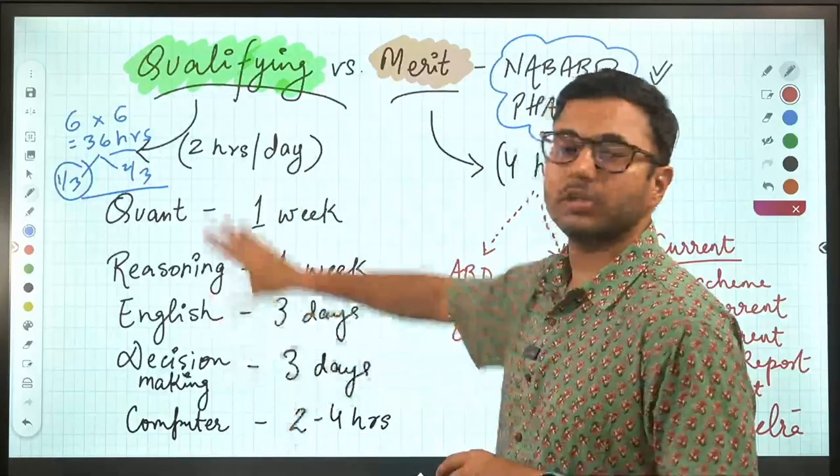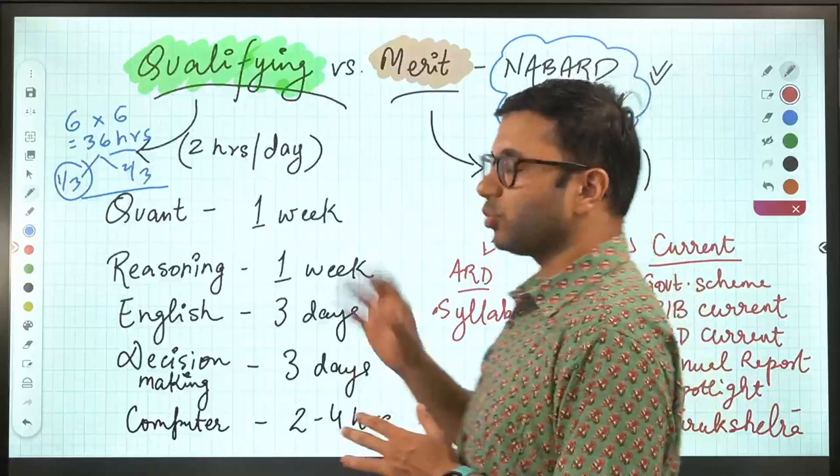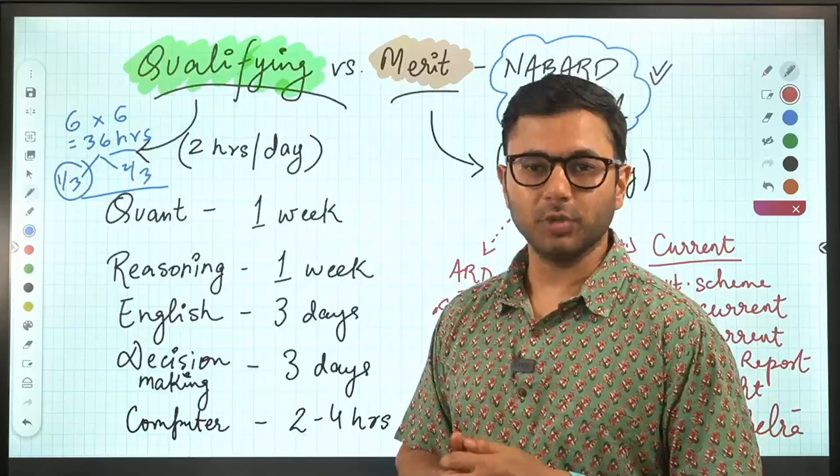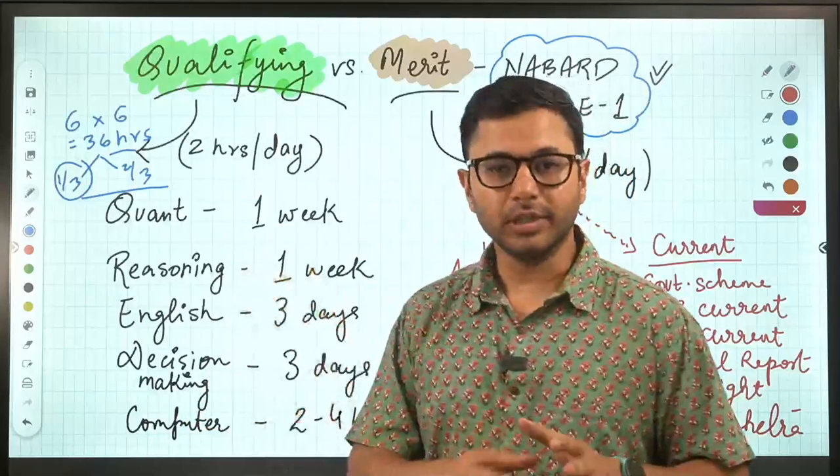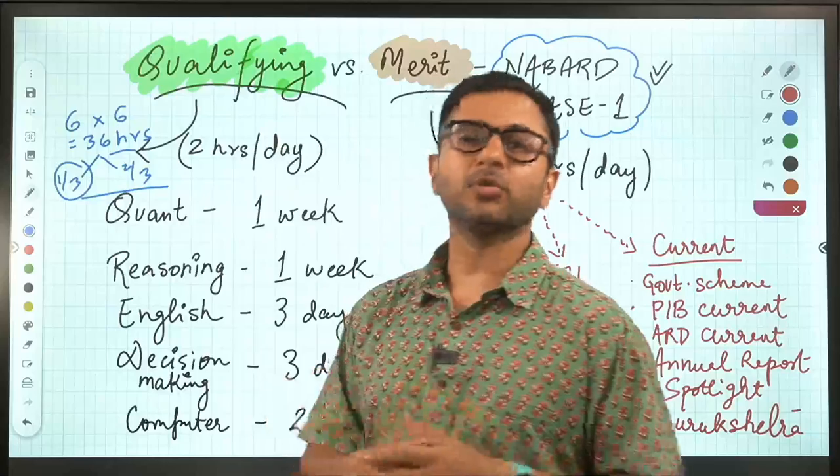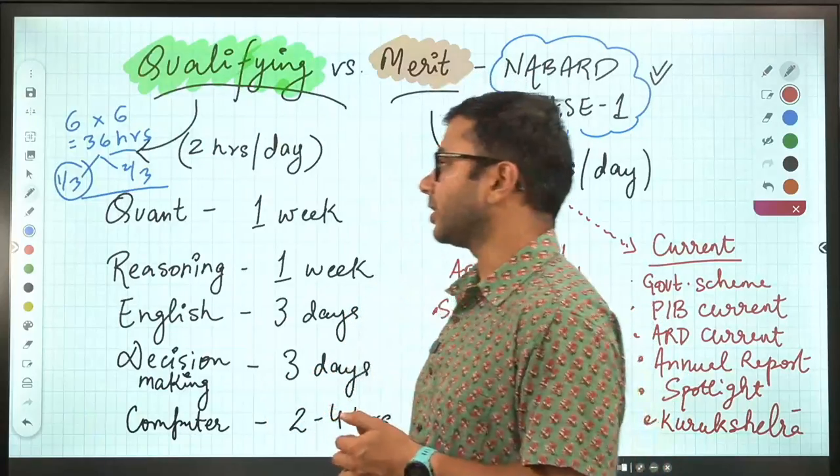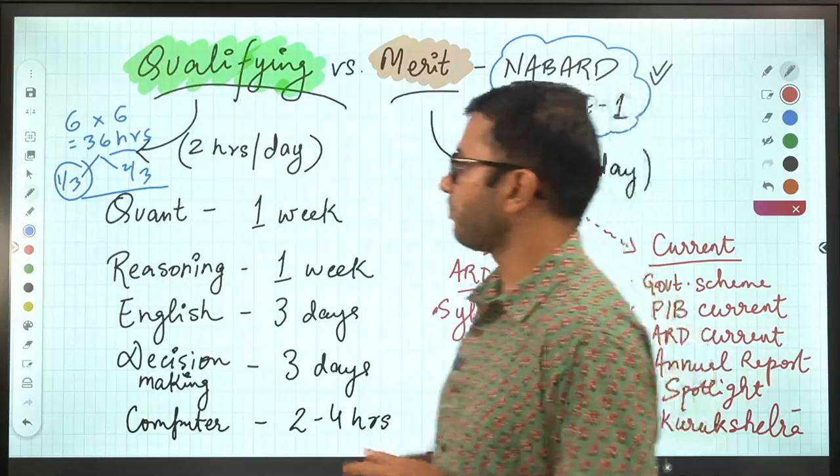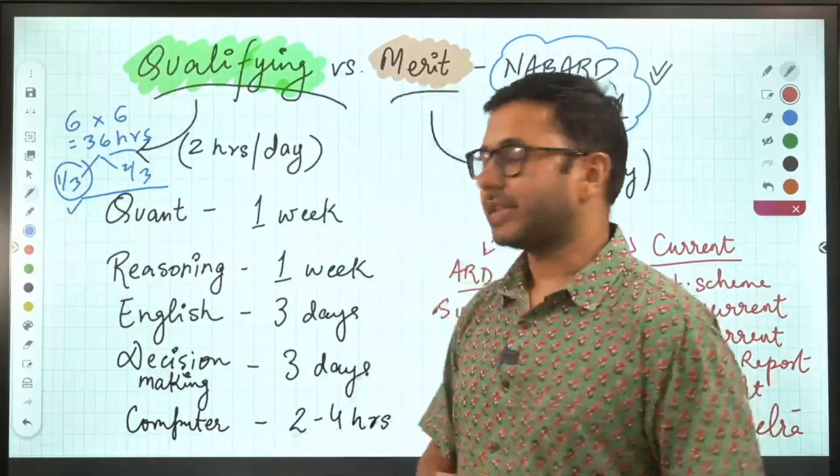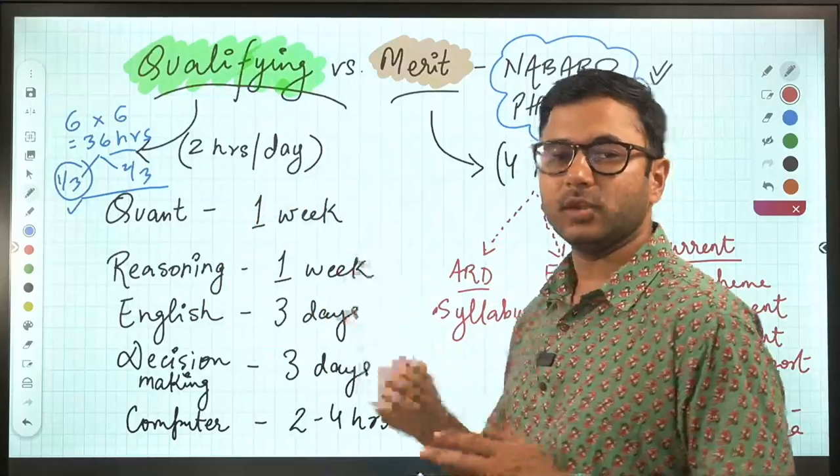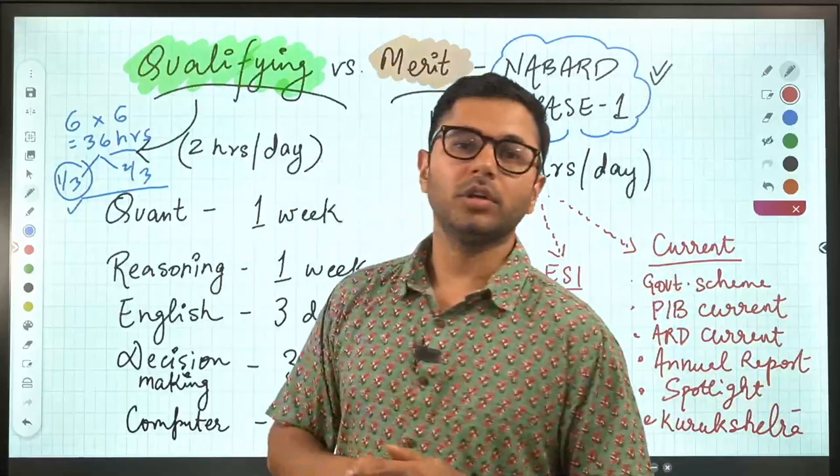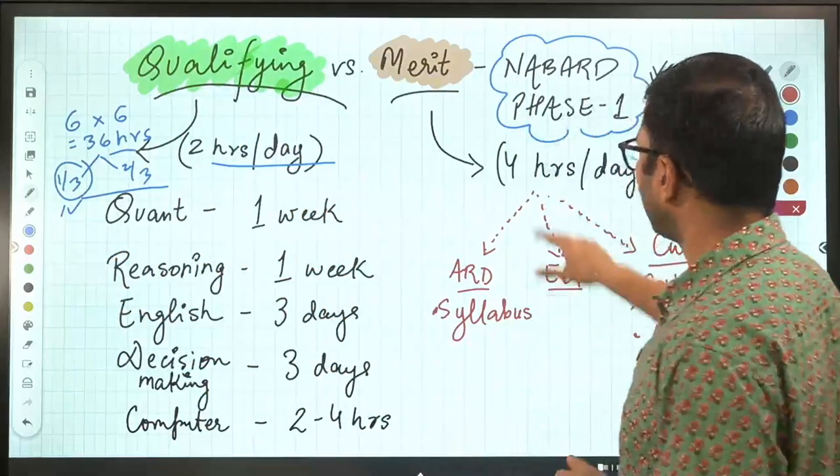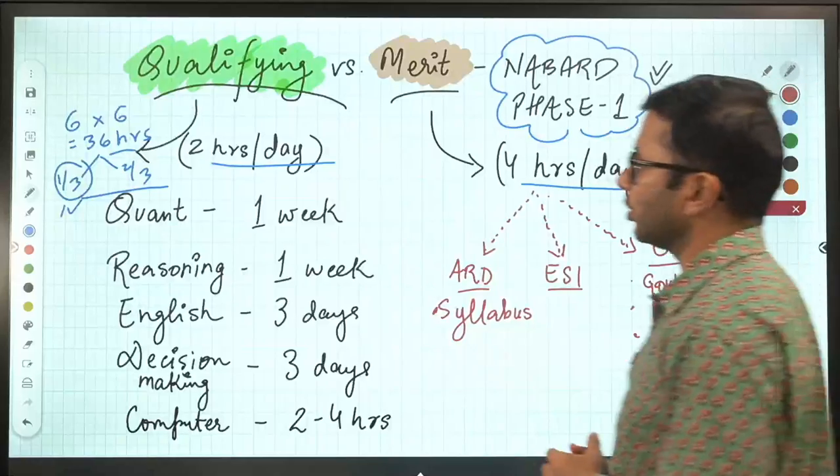Therefore, we cannot ignore the qualifying subjects, but at the same time, we have to understand that we cannot spend too much time on these qualifying subjects as well. Because if we do, then we might not be able to clear the cutoff. Therefore, Buddha's approach, try and create the right balance so that you don't end up spending too much time or too little time on these subjects. Keeping that in mind, one-third time can be allocated to qualifying subjects and the remaining two-thirds time can be allocated to the merit subjects. One-third of six hours comes out to be two hours per day and two-thirds of six hours comes out to be four hours per day.